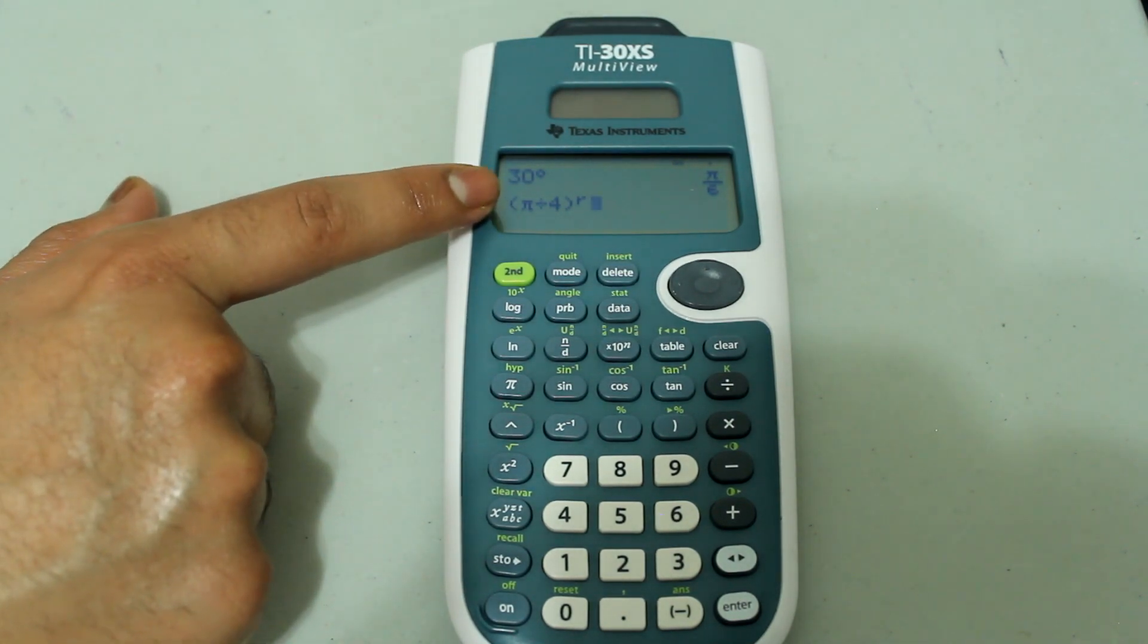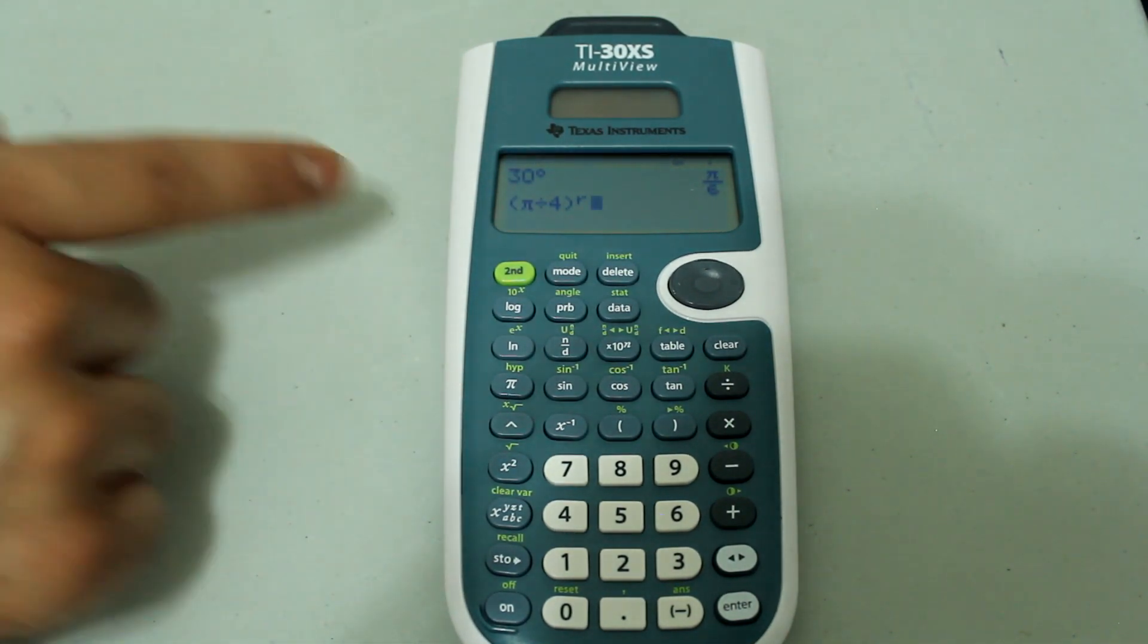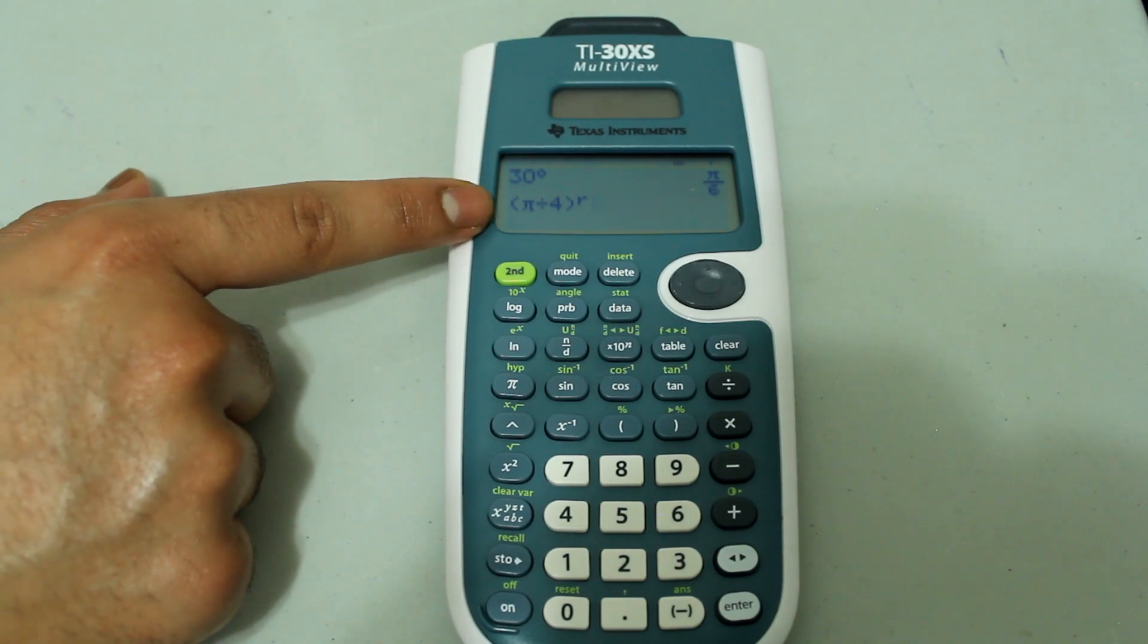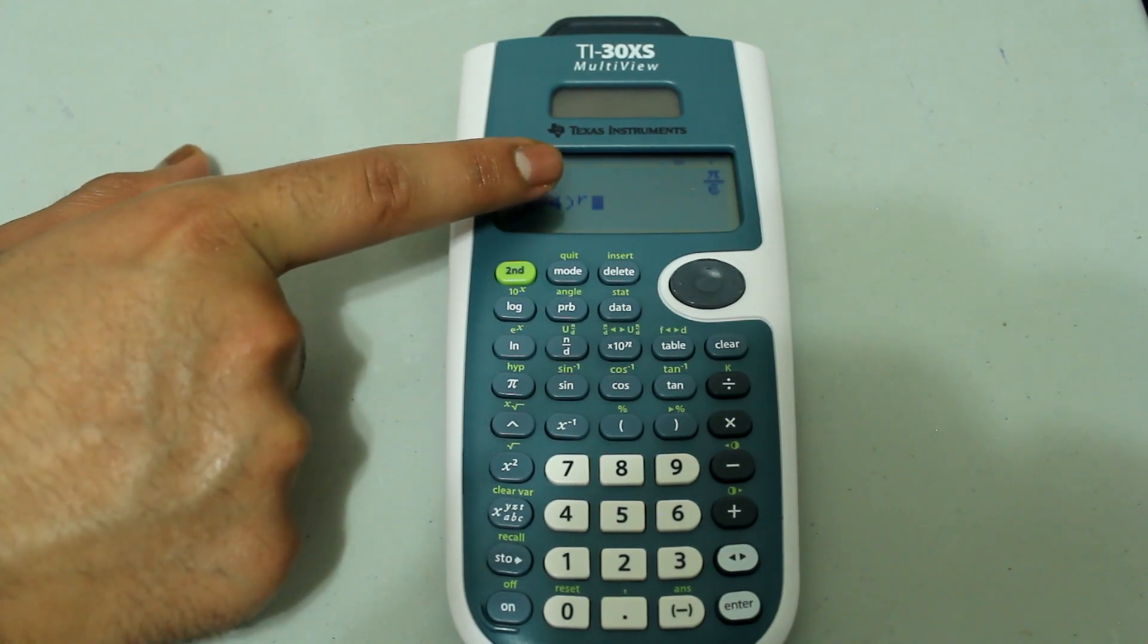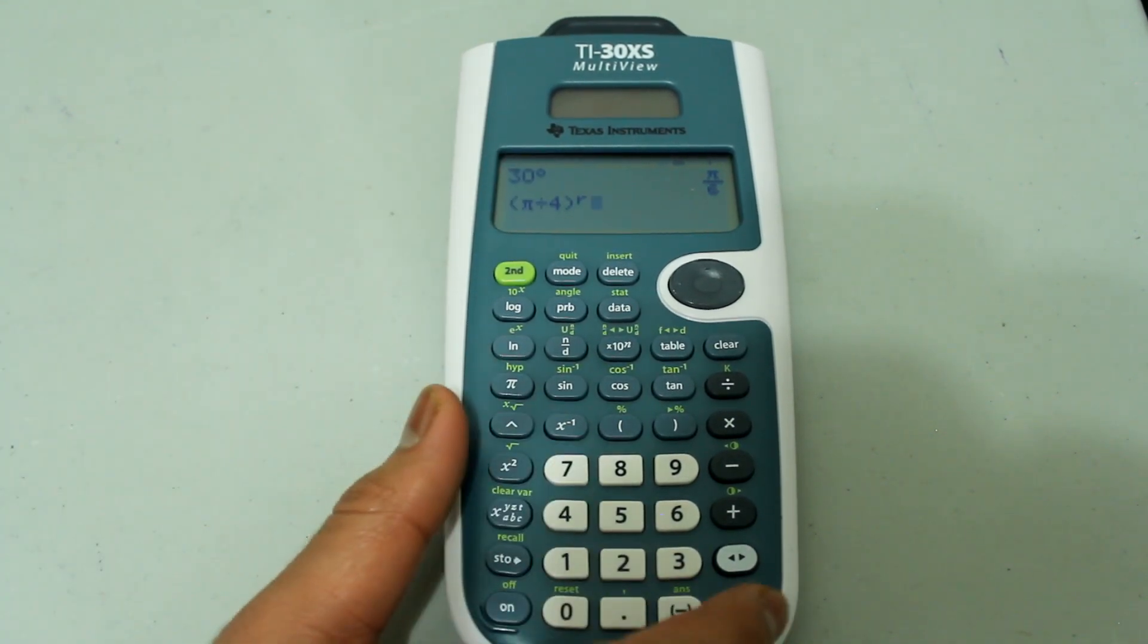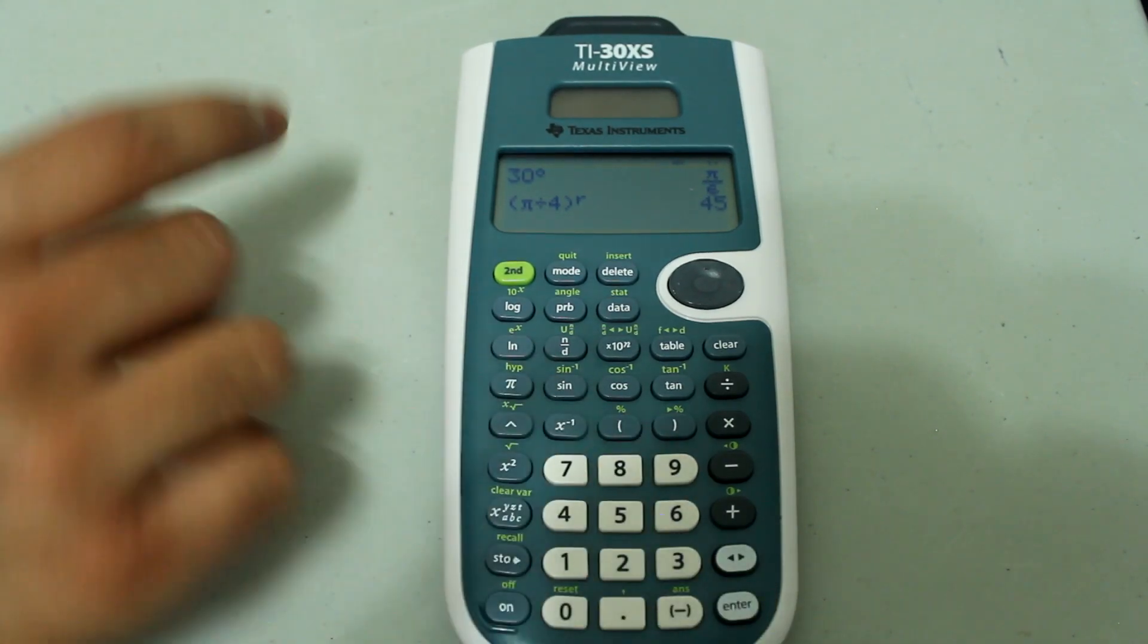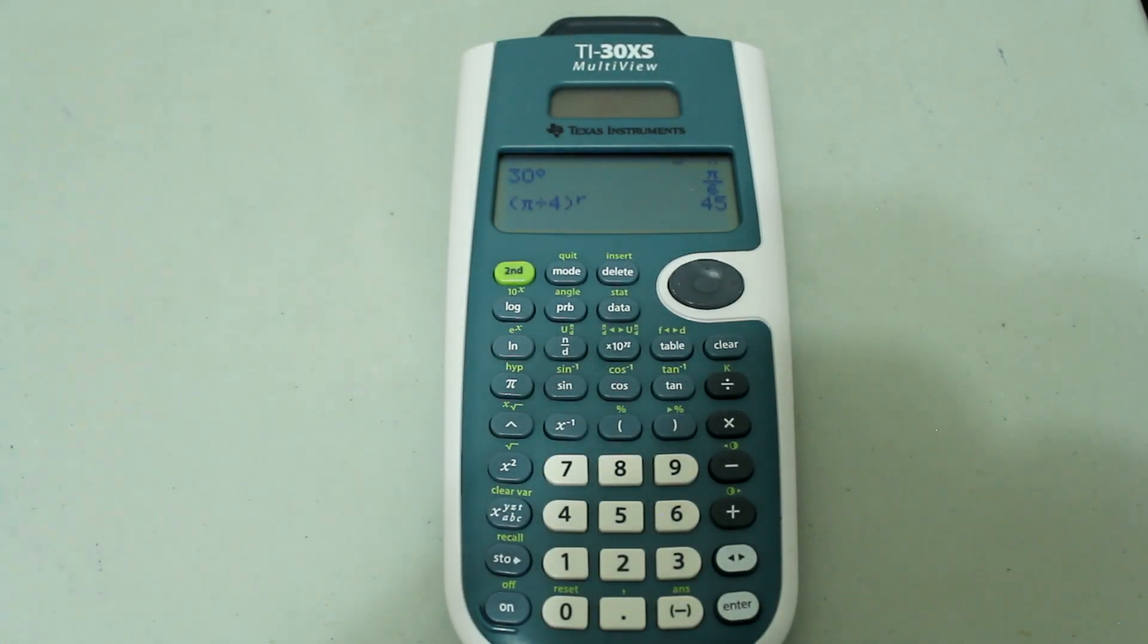And now the entry looks like this, pi over 4, and with this little r over here. And if we press enter, the answer comes as 45 degrees.